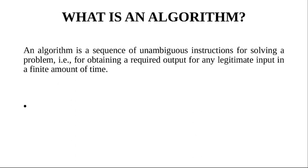What is an algorithm? An algorithm is a sequence of unambiguous instructions for solving a problem. For example, if you want to multiply two numbers, you take one number and another number, multiply them together, and get the result.